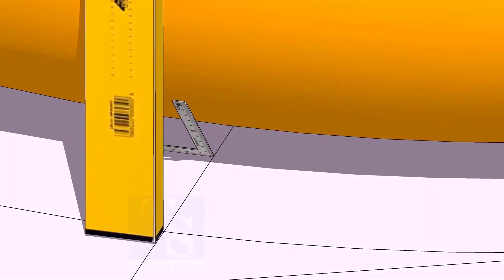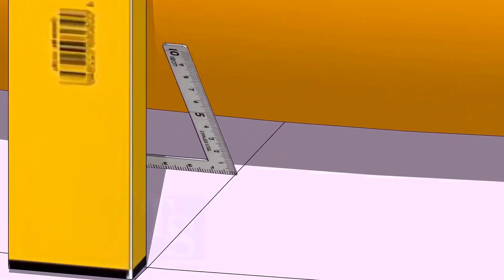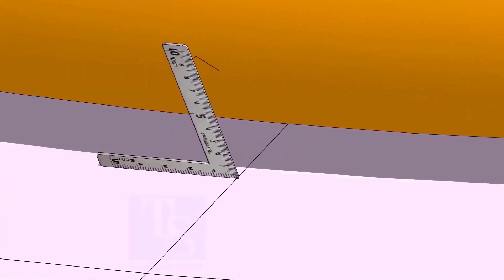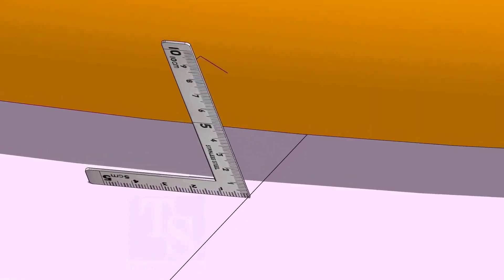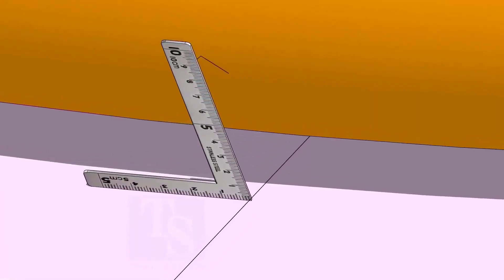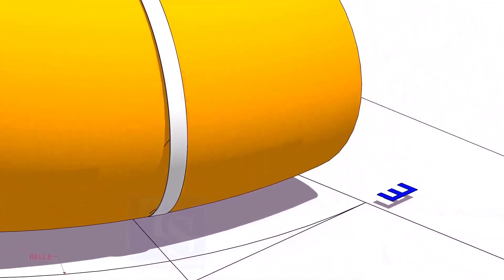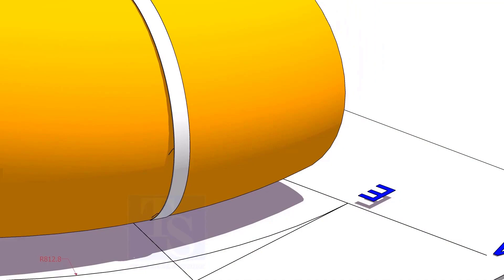At the bottom side, use a small right angle and transfer the line to the elbow on both sides. Use a bend scale and connect the marks to form a circle around the elbow.